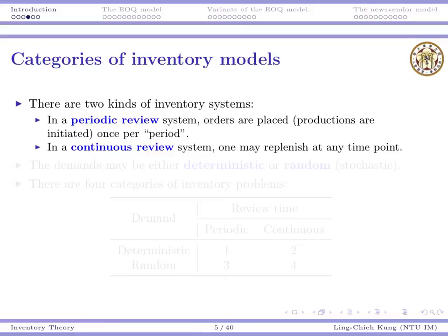Each day you will check whether you still have enough products. If you still have enough, you don't do any production. But if you have no product, then you initiate a production process. That's called periodic review.